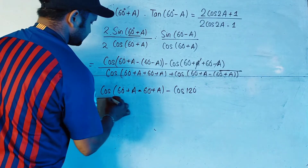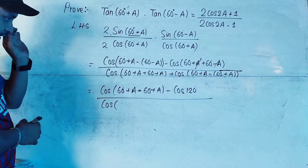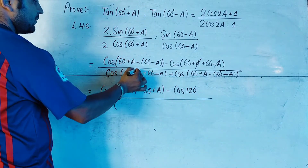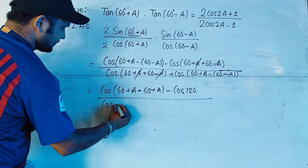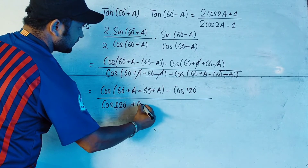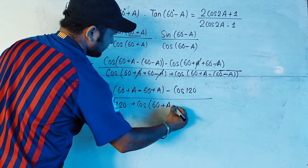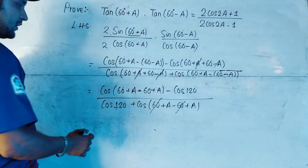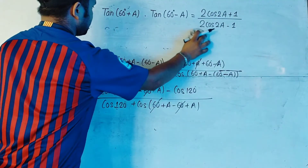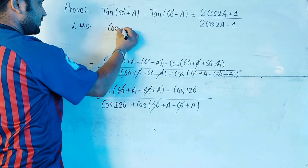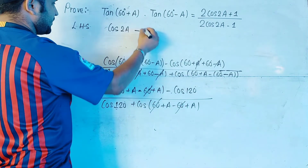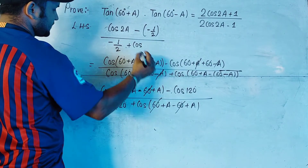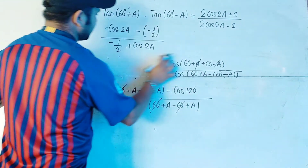Inside the bracket we can write cos((60+a)-(60-a)) minus cos((60+a)+(60-a)). The terms simplify: 60 and -60 cancel, giving cos(2a), and we get cos(120). The value of cos120° is -1/2. So in the numerator we have cos(2a) minus (-1/2), and in the denominator we have -1/2 plus cos(2a).